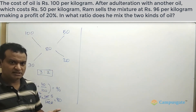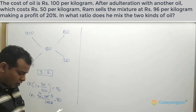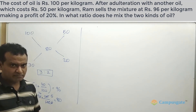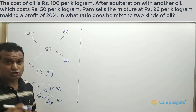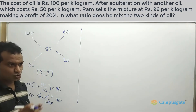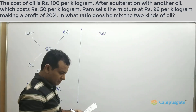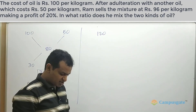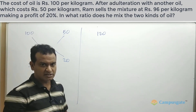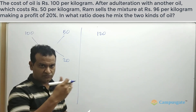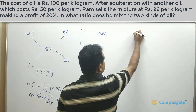This is one way of solving. Another way is to convert all cost prices into selling prices. For example, the cost price of the first oil is 100 rupees per kilogram; at 20 percent profit, the selling price would be 120. The second oil costs 50 rupees per kilogram; increasing by 20 percent means one-fifth of 50 is 10, so 50 plus 10 gives 60.